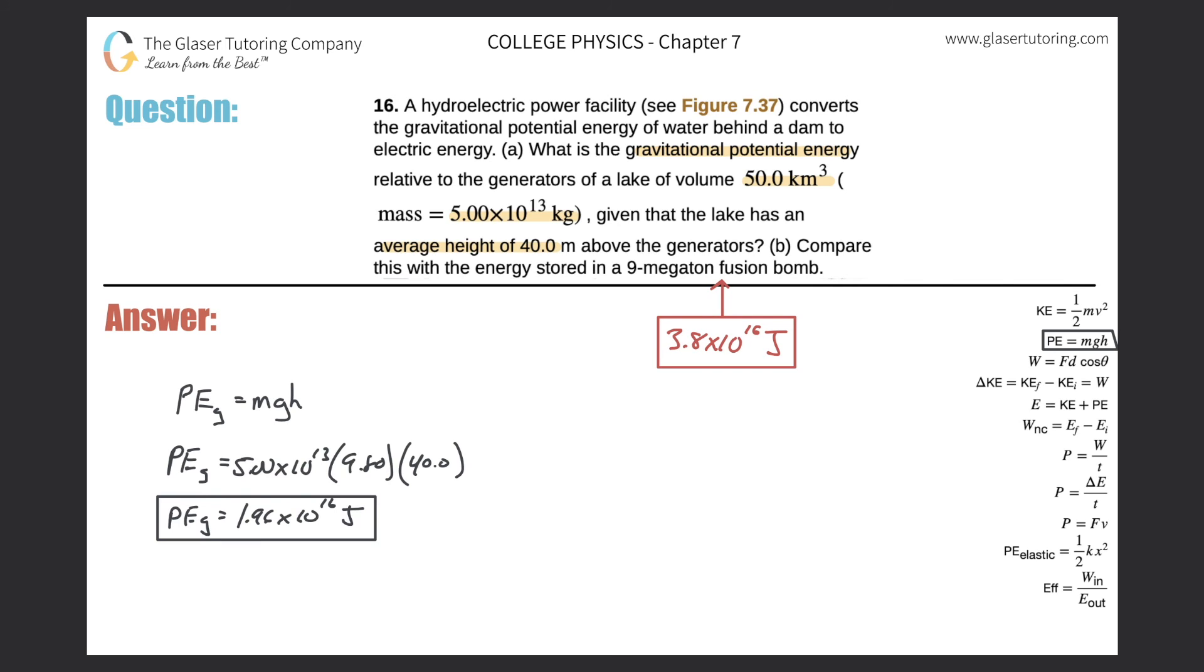Okay, so now our job is, so that's letter A. Letter B says compare this with the energy stored in a 9 megaton fusion bomb. So this is located, I think, in table 7.1 in your book. So you can just look that up, but that's where this number comes from.